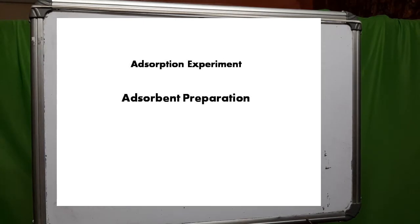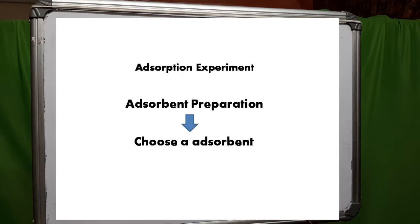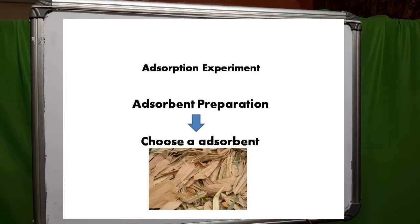Hello friends, today I am discussing one of the most important parts of adsorption: the preparation of the adsorbent. First, choose an adsorbent by which you want to remove the toxic components. Here I have chosen bamboo leaves as the adsorbent.